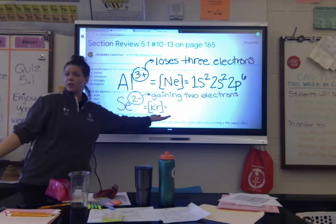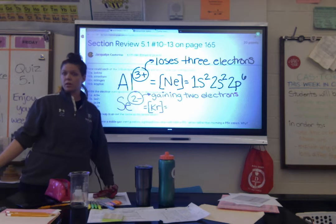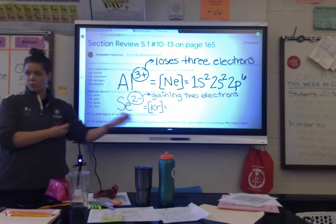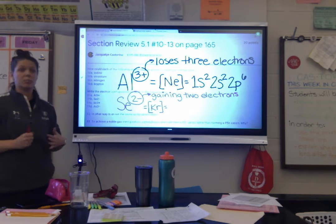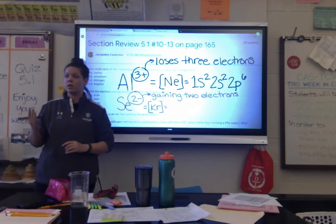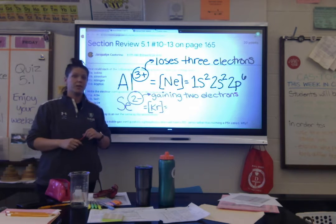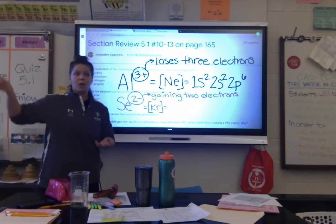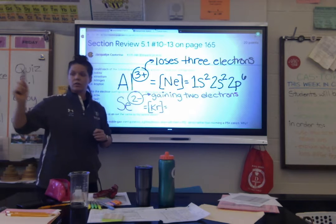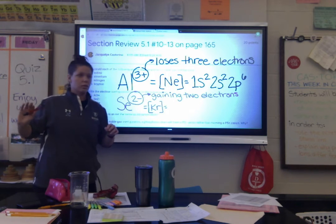For example, aluminum can have 13 protons and 13 electrons — neutral, an atom. Or aluminum can have 13 protons and 10 electrons — positive, an ion. So the question asks what's the same. If we're changing electrons, what are we not changing? Protons and neutrons stay the same for both atoms and ions. We never talk about changing those in this chapter — all we change are electrons.